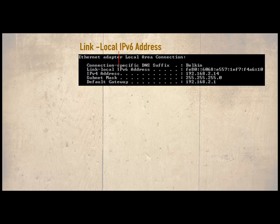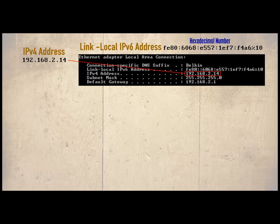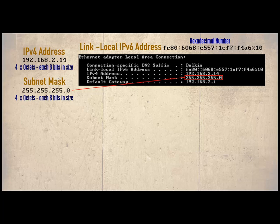The link-local IPv6 address is the version 6 address we spoke about earlier. Notice this address is a hexadecimal number — not only does it contain all the numbers from 0 to 10 but also the letters A to F. This is the system's IPv4 address, referred to simply as the IP address. The key thing to notice is the IP address consists of 4 numbers each separated by a full stop. Each of these sections is known as an octet due to them being 8 bits in size. The subnet mask is also made up of 4 octets separated by full stops.